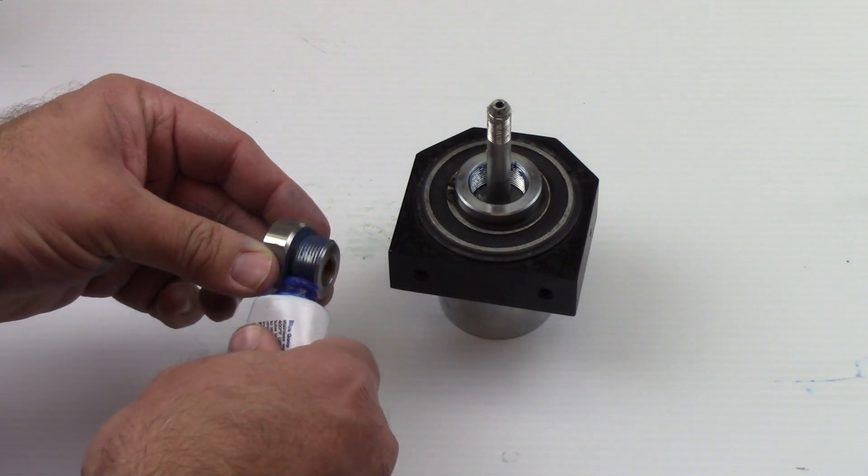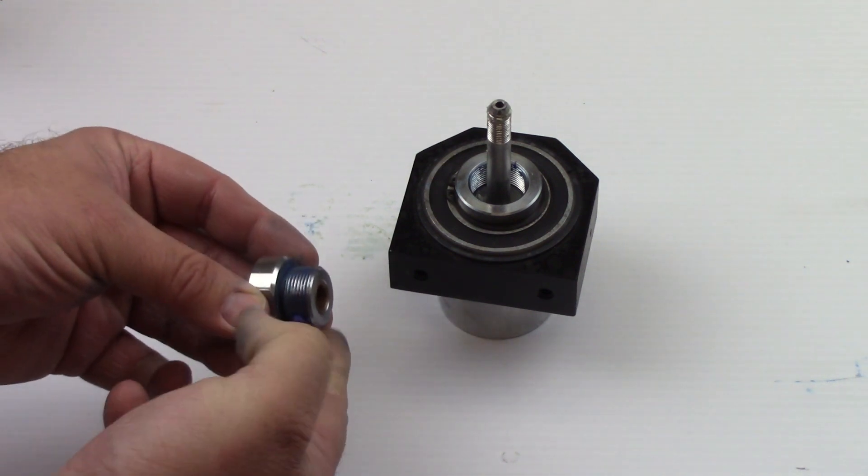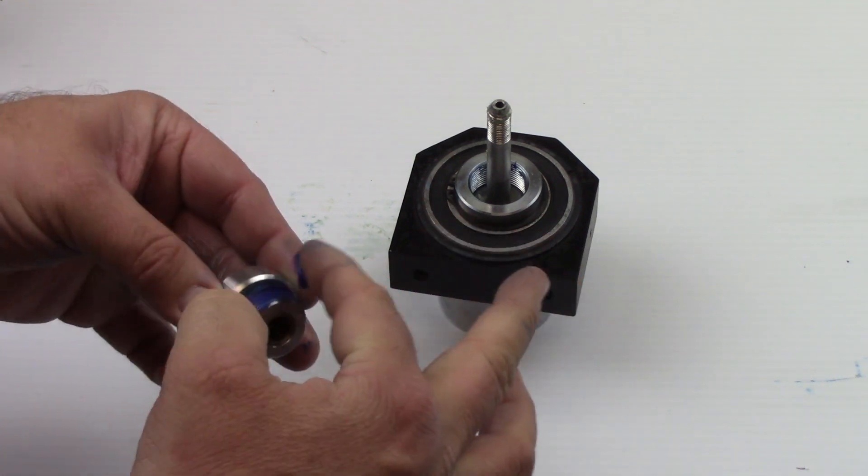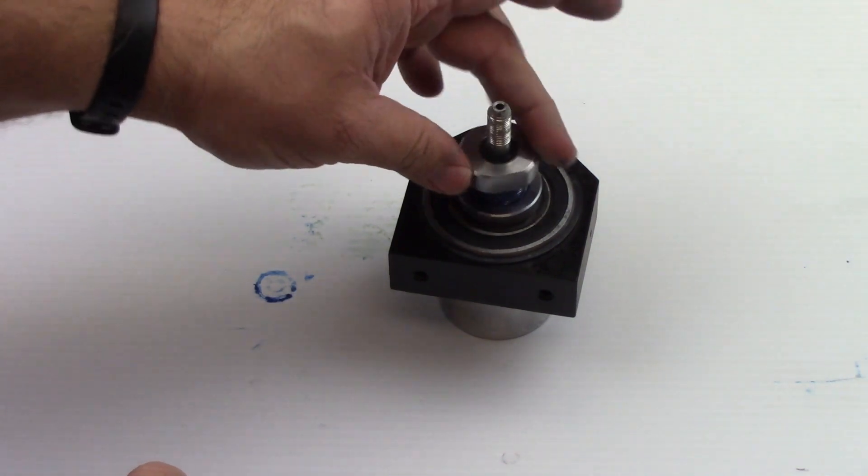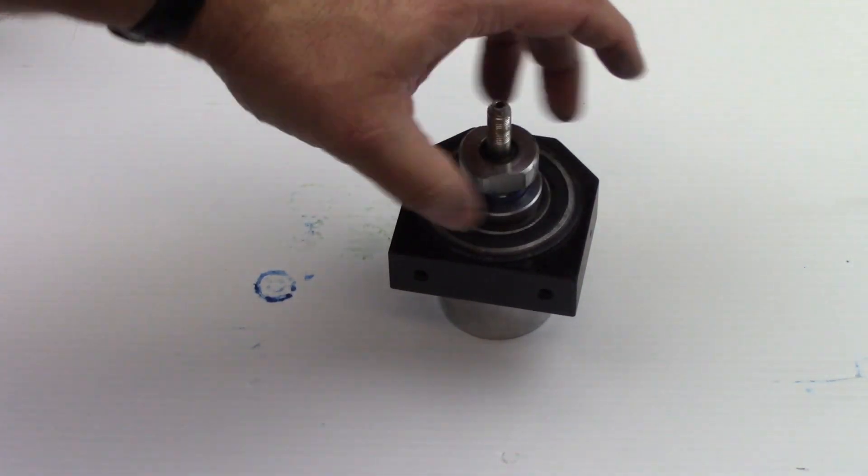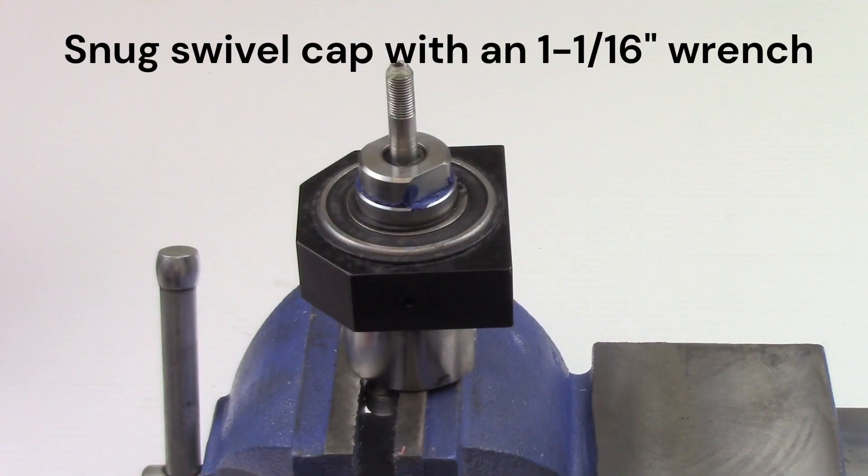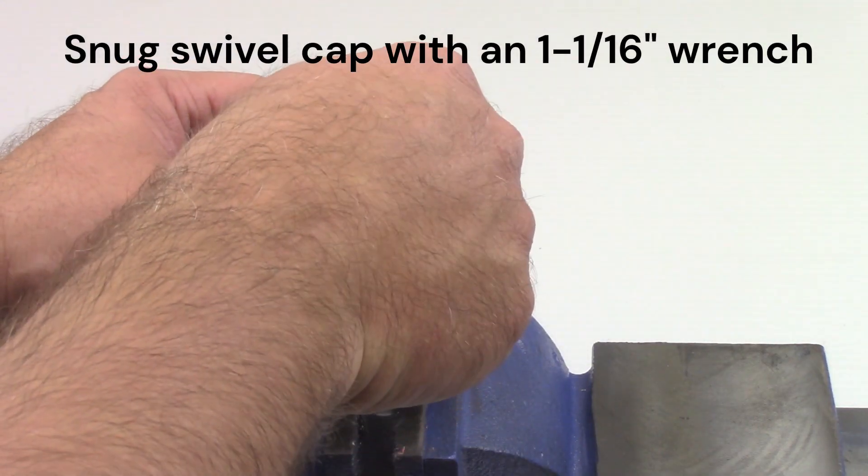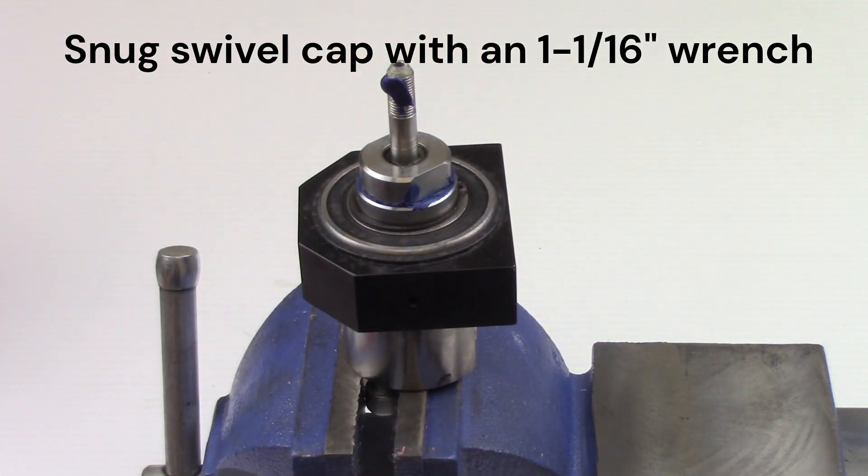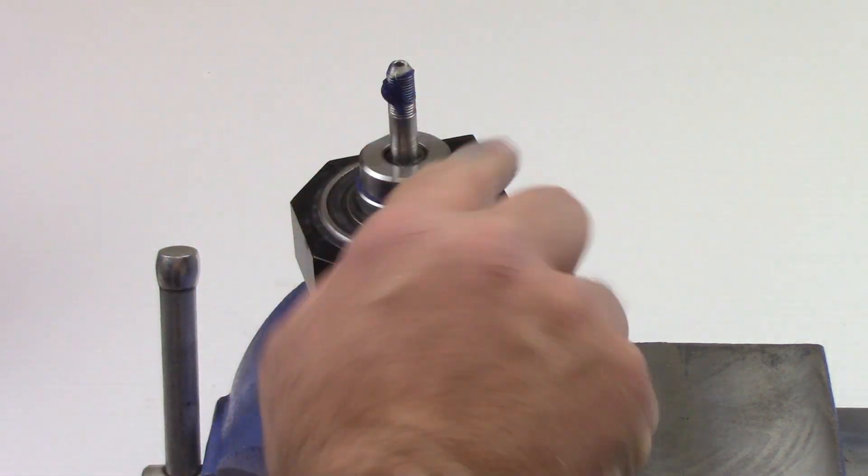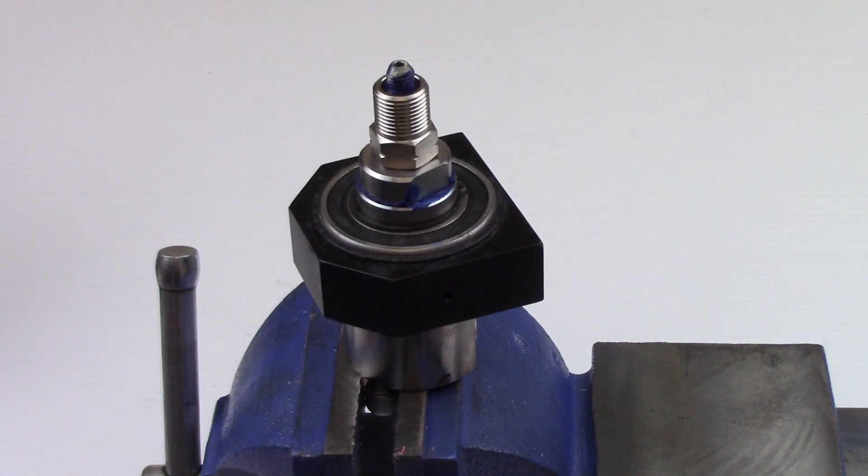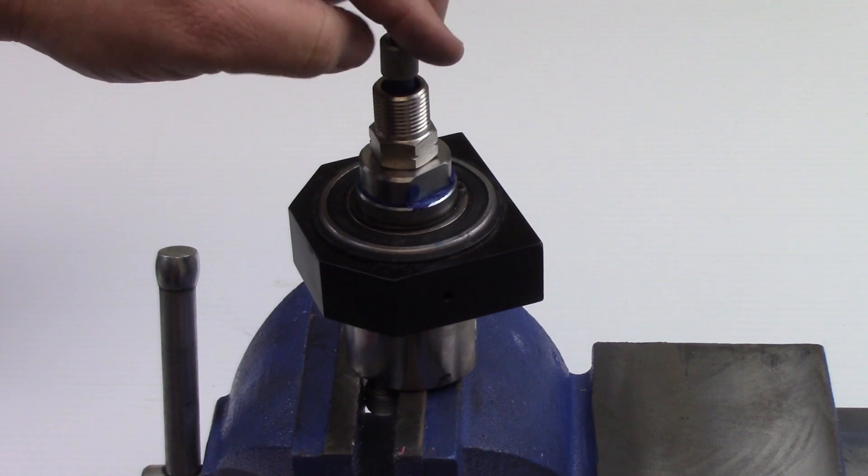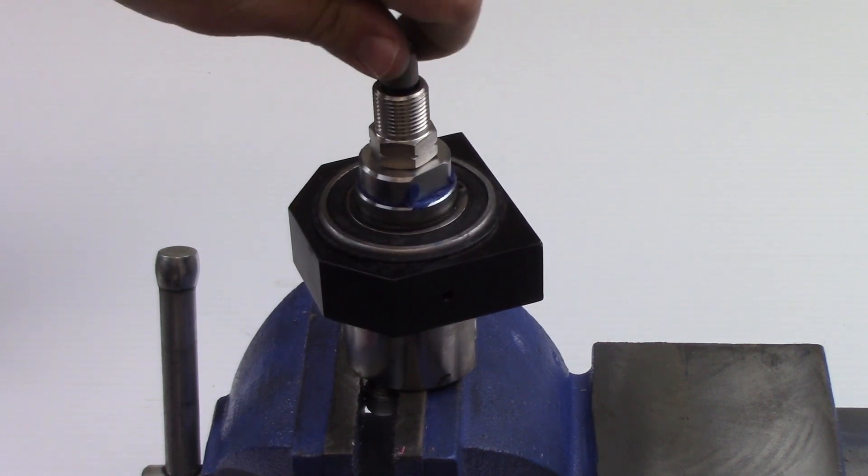Apply precision lube to the threads of the swivel cap. Insert a clean gland nut over the swivel shaft and screw a collar onto the swivel shaft threads, leaving three swivel shaft threads exposed.